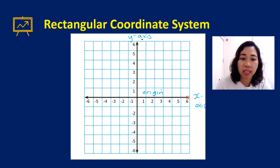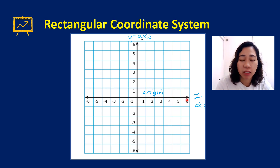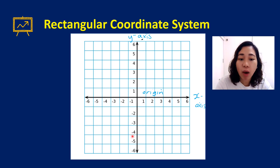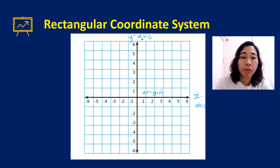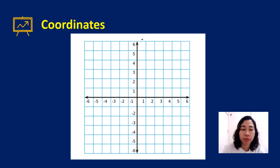The numbers on the right of the origin along the x-axis are positive, and the numbers on the left are negative. The numbers below are negative, and the numbers above are all positive.